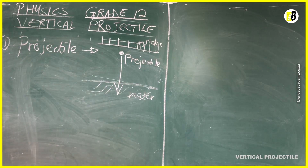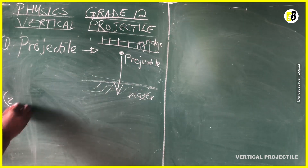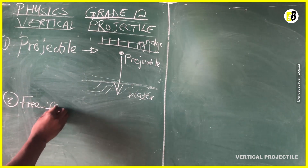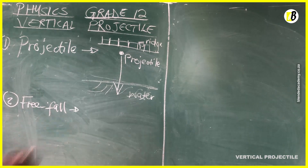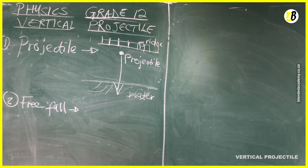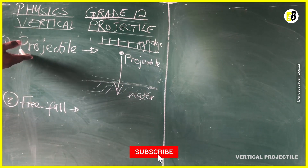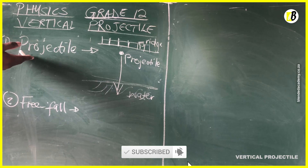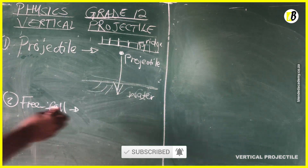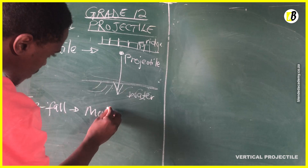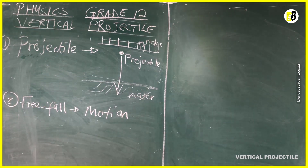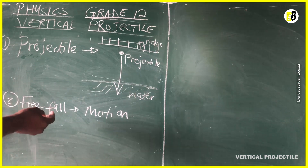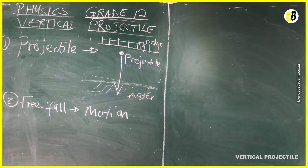Free fall refers to the motion of an object in the absence of air friction. This means the only force acting on the object is gravity, so we only have gravitational acceleration acting on it.